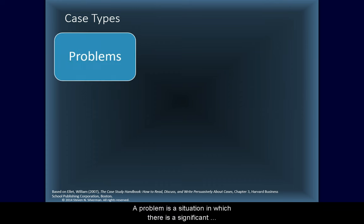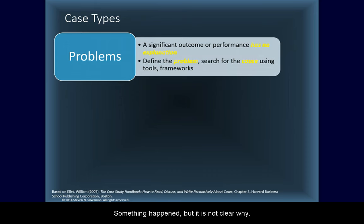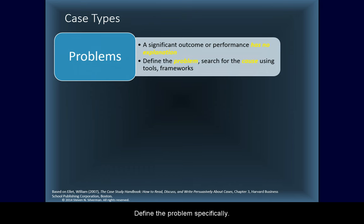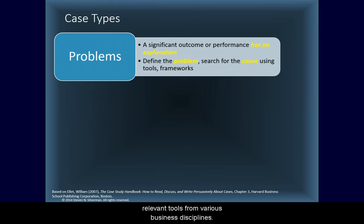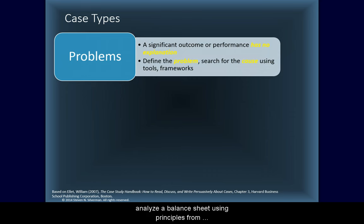A problem is a situation in which there is a significant outcome or performance, but no explicit explanation for it. Something happened, but it is not clear why. Define the problem specifically. Search for the cause of the situation in the case using relevant tools from various business disciplines. If you use marketing, you would use frameworks like the 4 P's, the 3 C's, and so on. Similarly, you might use discounted cash flow analysis from finance, or your ability to analyze a balance sheet using principles from accounting, and so on across the disciplines.